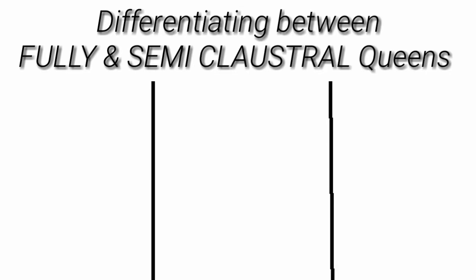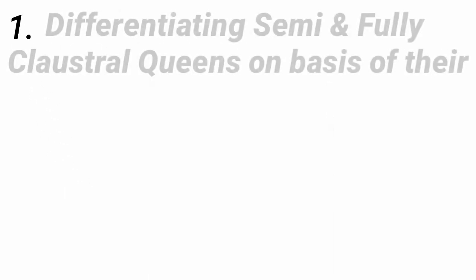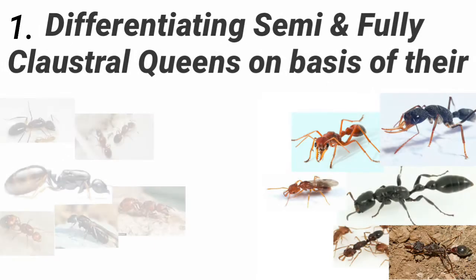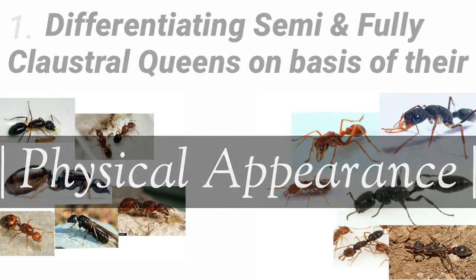To make things easier, I need to break this down into three parts. First, differentiating semi and fully claustral queens on the basis of their physical appearance.